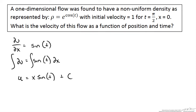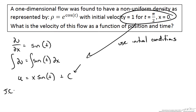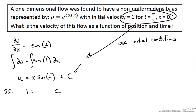Now we need to solve for this constant, and luckily we have initial conditions we can use. Our velocity is equal to 1 for a time of pi over 2, and sine of pi over 2 is just 1, and x equals 0. So we see that our constant is equal to 1. Plugging that back into our equation, we get our final answer: velocity as a function of x and t is equal to x sine of t plus 1.